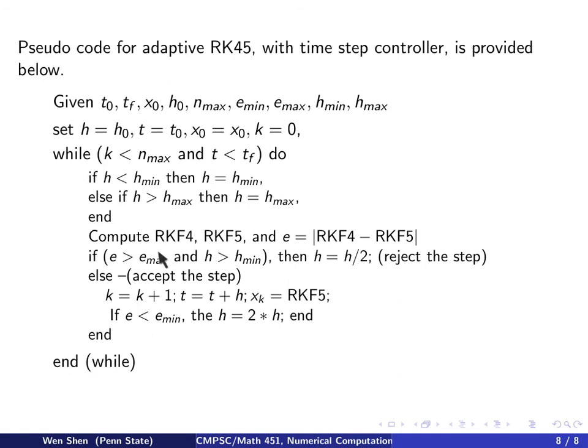Then we compute the Runge-Kutta-Fehlberg fourth-order and fifth-order method and compute the measurement for error by measuring the distance between those two answers. This step takes most of the time. After that, we check the error against the tolerance. If error is bigger than the maximum error and h is bigger than h_min, then the error is too big, so I half the step size and reject the step. I'll redo it. Else, I accept the step.